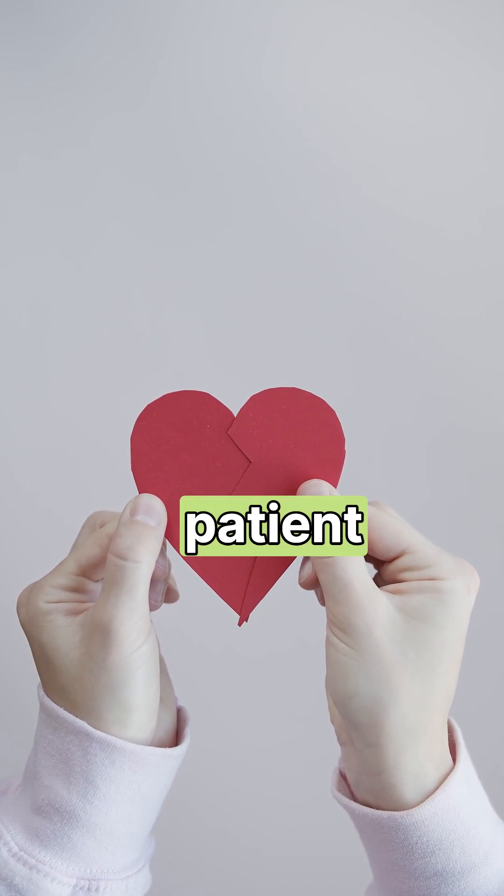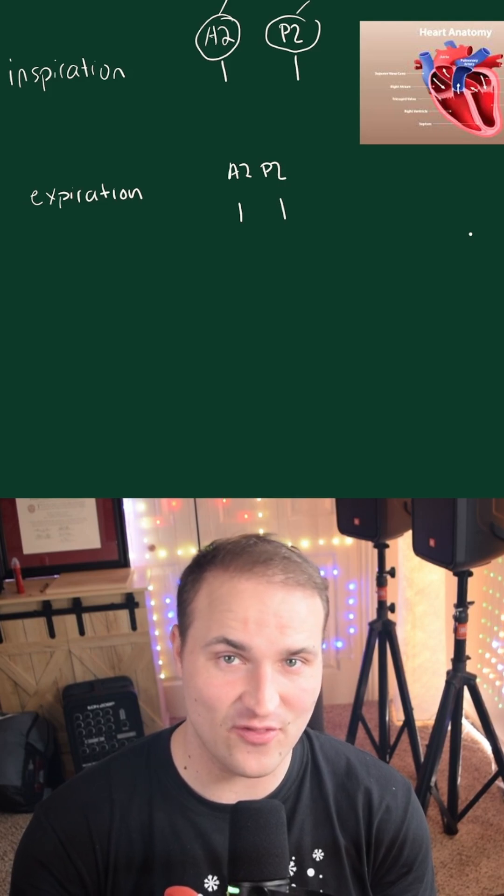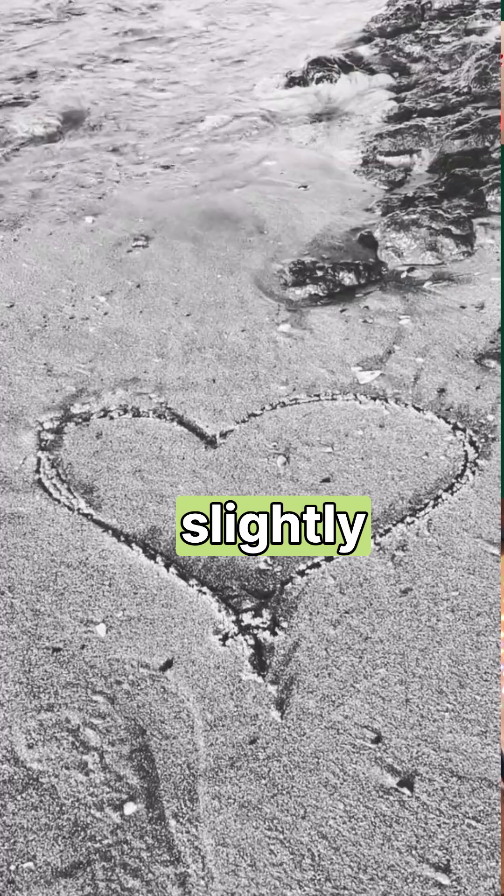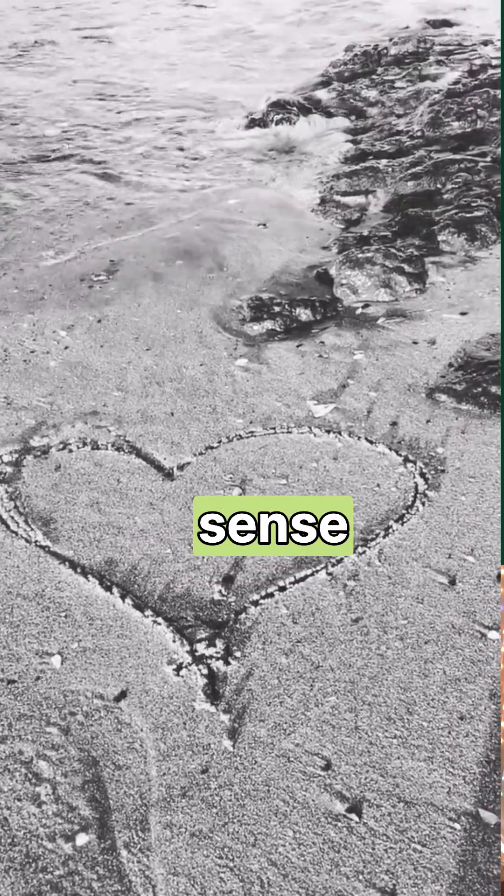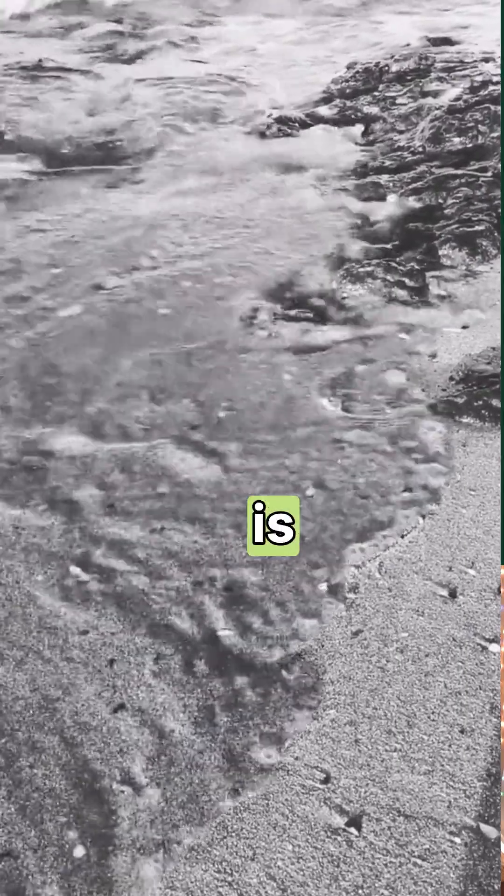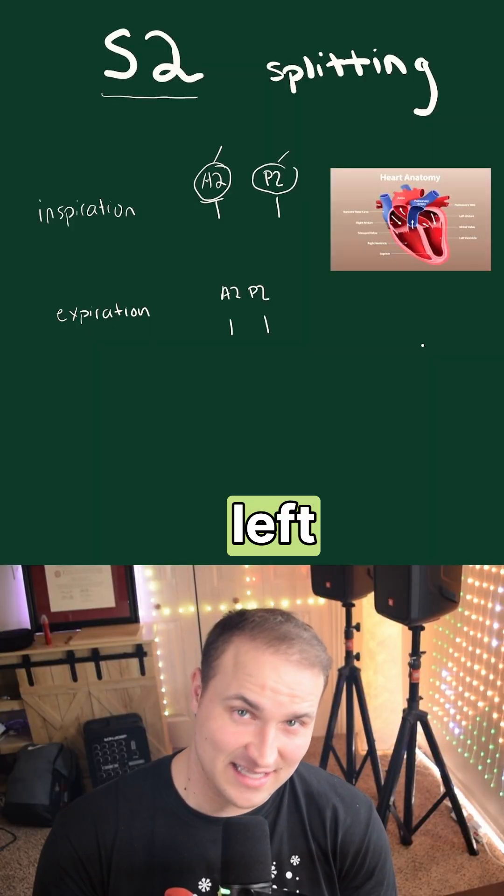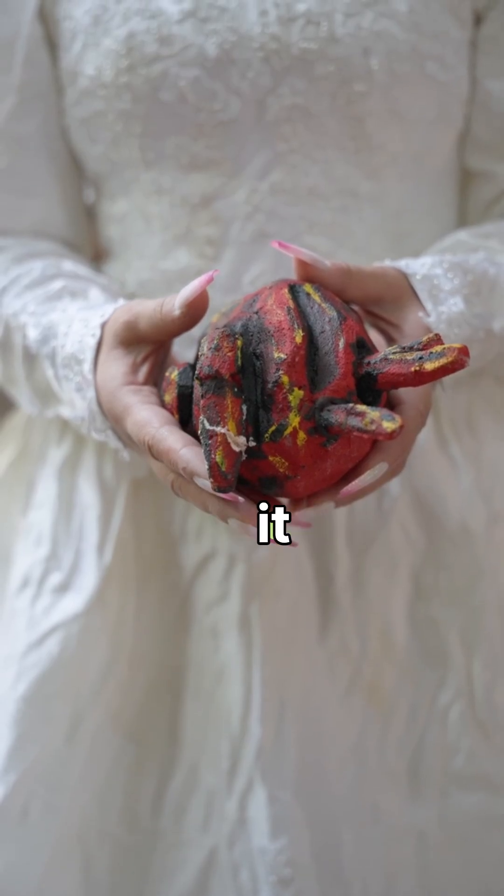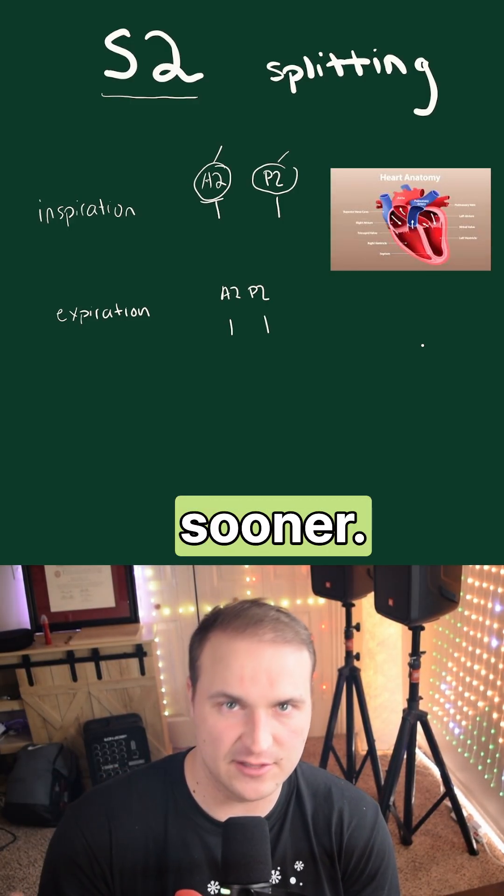And normally, in a healthy patient, you will hear A2 and then P2. The A2 is just slightly earlier. And that should make sense because A2 is usually first since the left ventricle generates high pressure and then it ejects efficiently and it finishes the ejection just a bit sooner.